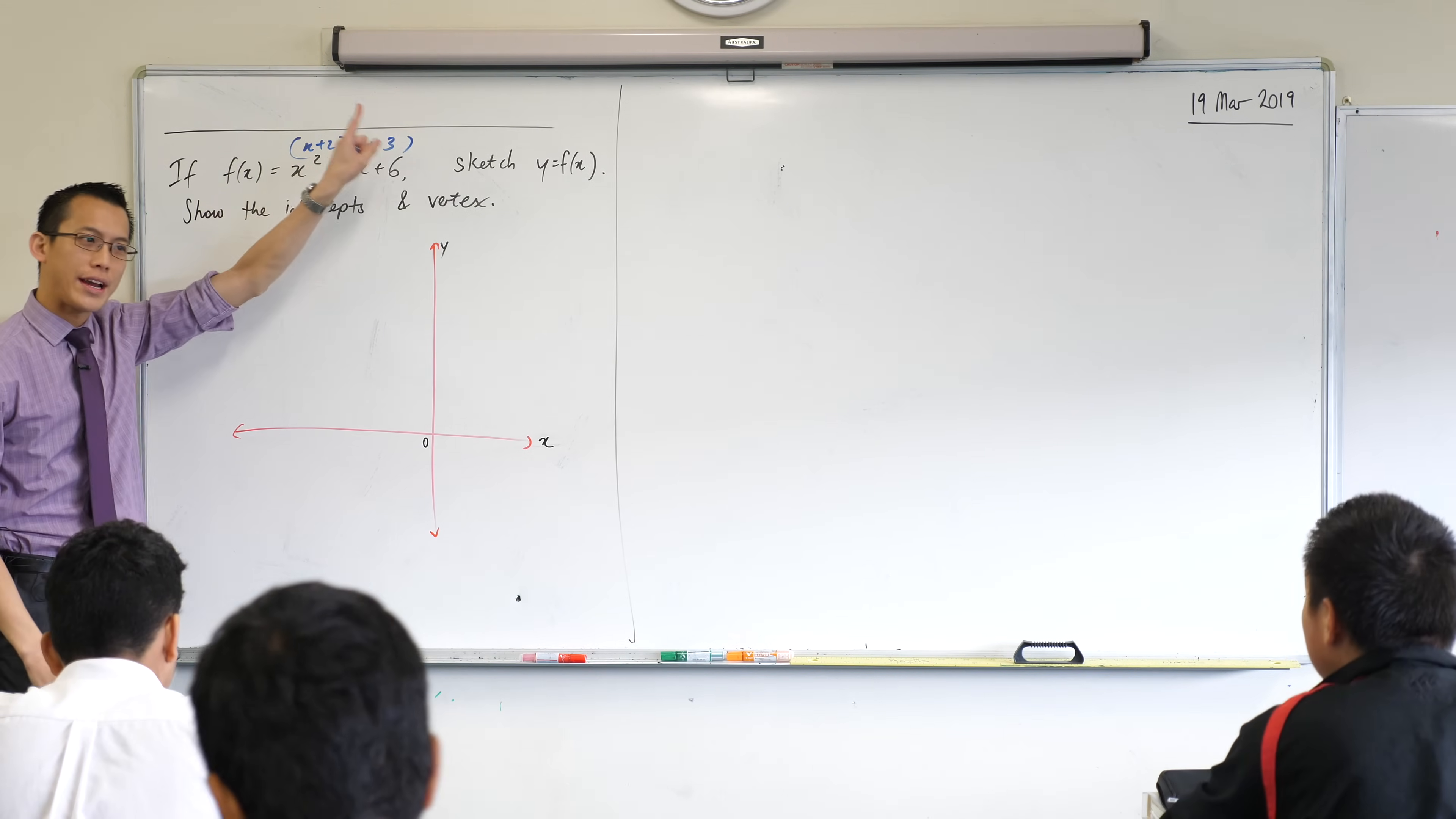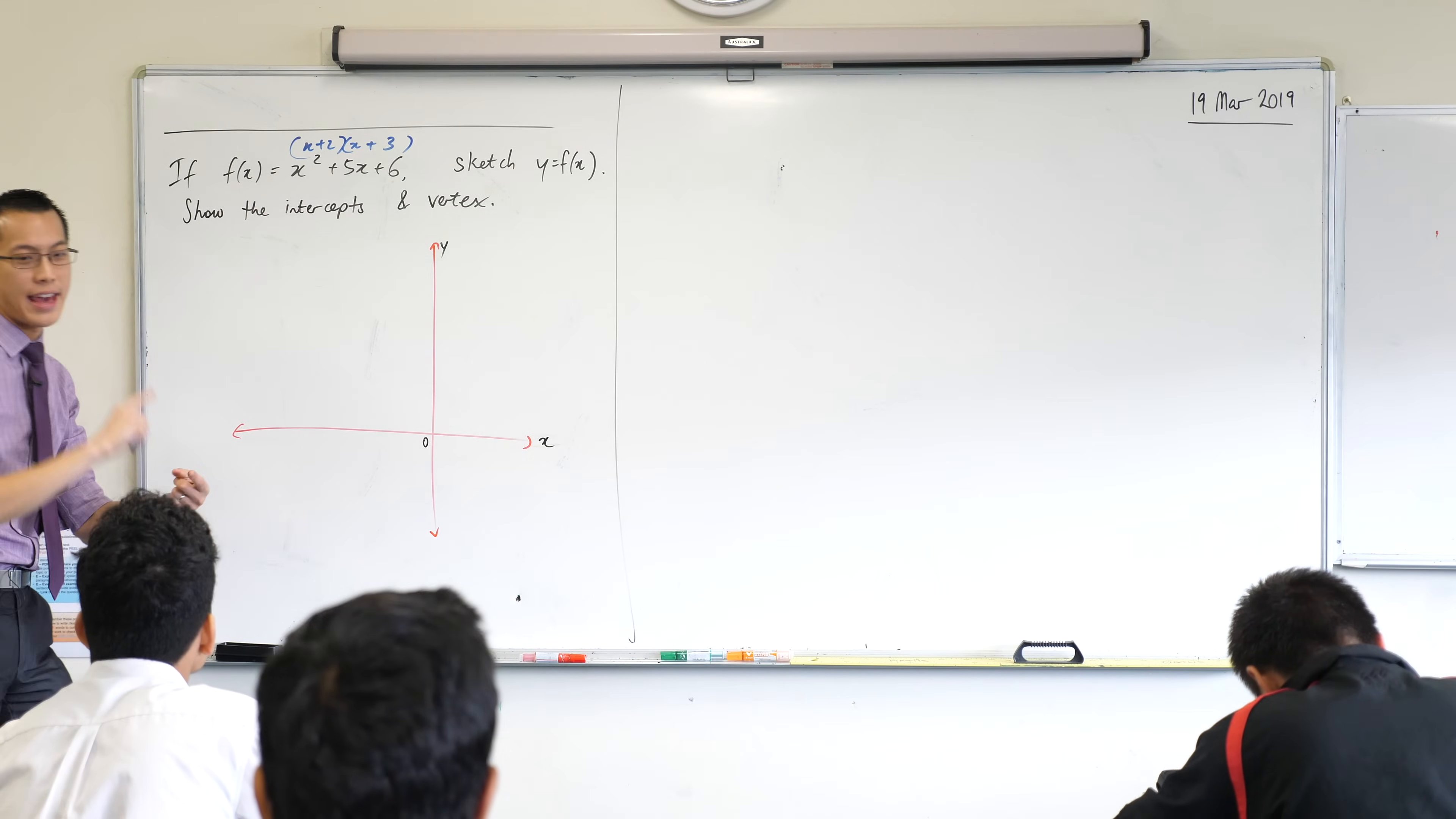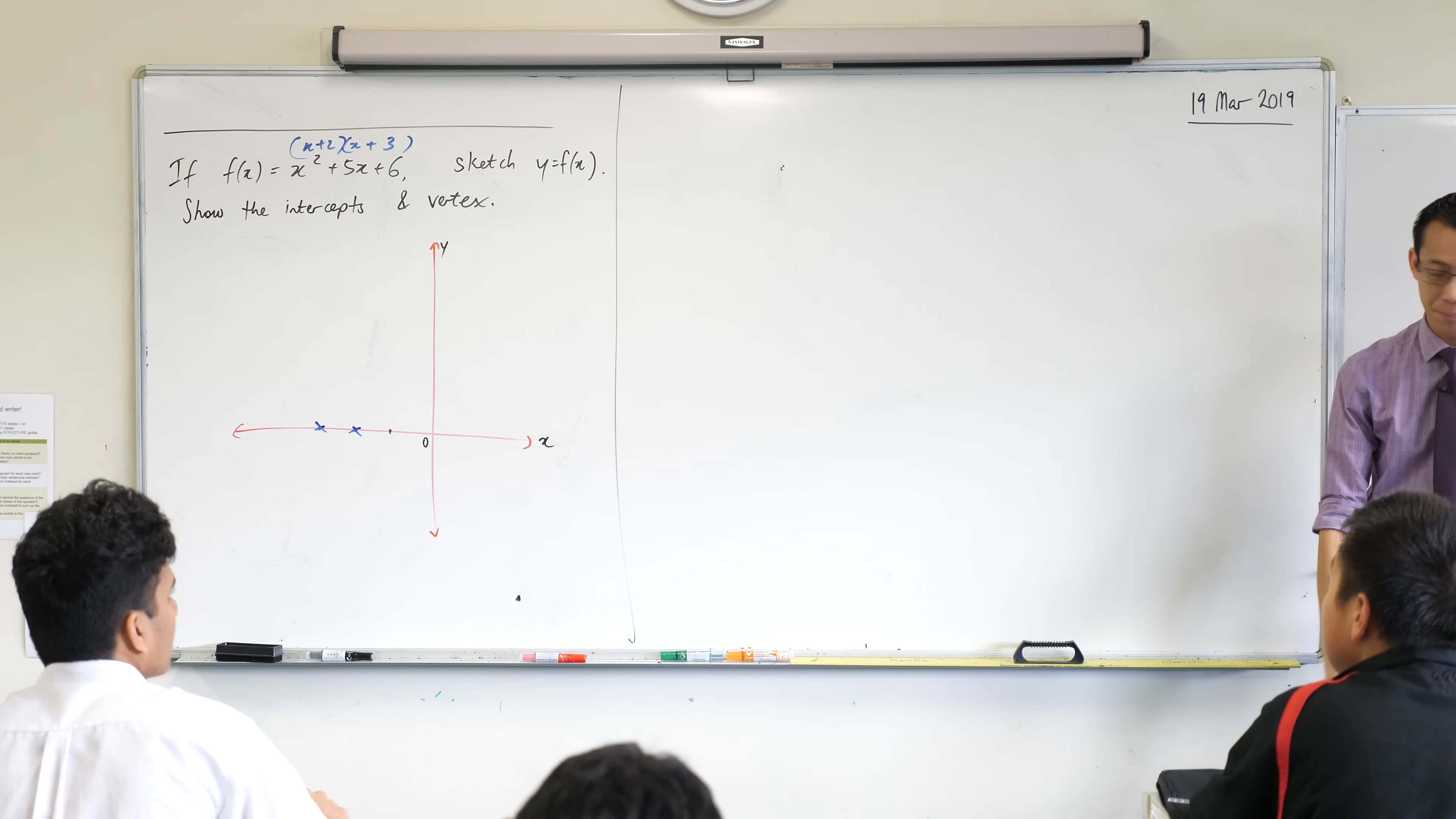Now what are you going to read off when you see x plus 2, x plus 3? What information does that give you? You could expand it back if you wanted, but I want something more important. x equals negative 2 and x equals negative 3. What are those things? They're the x-intercepts. So I'm going to go 1, 2, 3. I'm putting in a couple of markers there. That's negative 2, negative 3. That's where my intercepts are going to be.